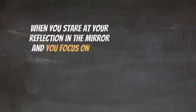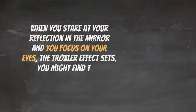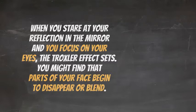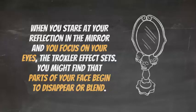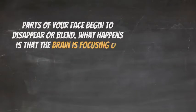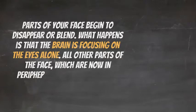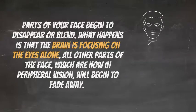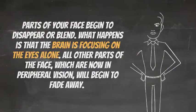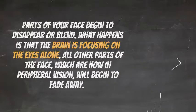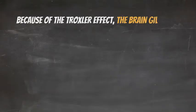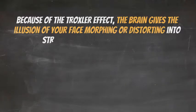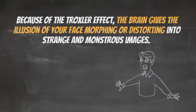When you stare at your reflection in the mirror and focus on your eyes, the Troxler effect sets in. You might find that parts of your face begin to disappear or blend. What happens is that the brain is focusing on the eyes alone. All other parts of the face, which are now in peripheral vision, will begin to fade away. Because of the Troxler effect, the brain gives the illusion of your face morphing or distorting into strange and monstrous images.